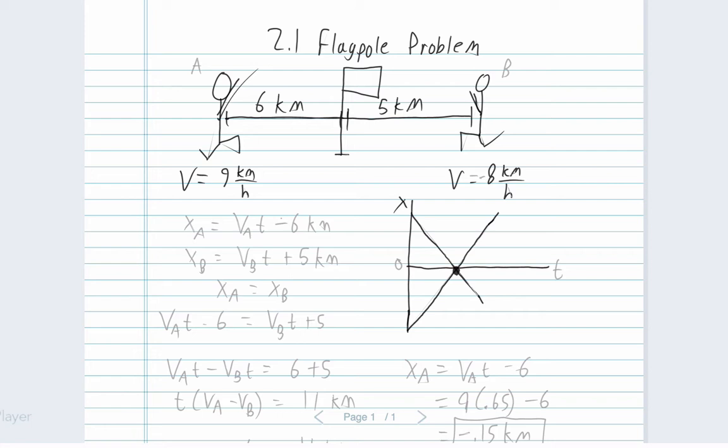The first thing to keep in mind is that the flagpole doesn't really mean anything to us. It's really just a mark for our origin point. What we call zero will be the flagpole's location. It doesn't do anything to the problem, it's just a reference point.